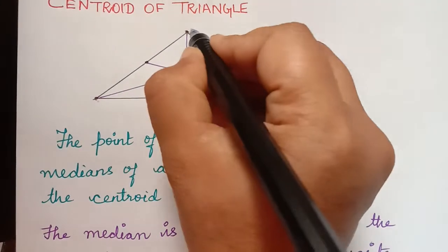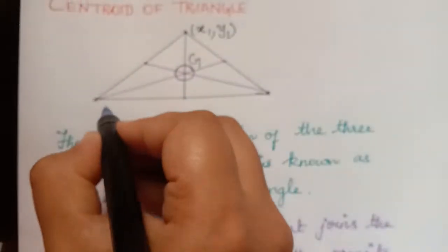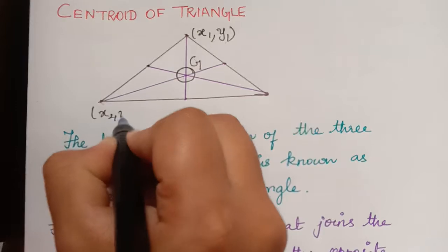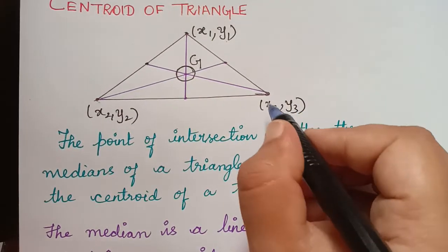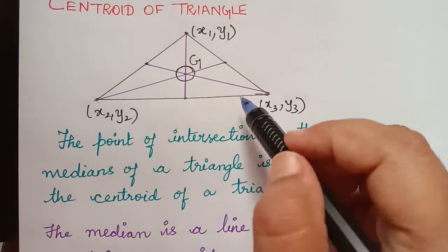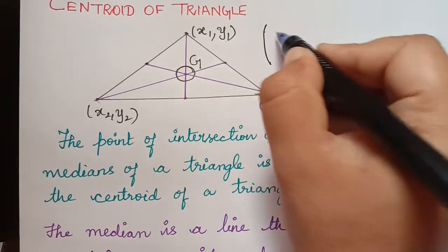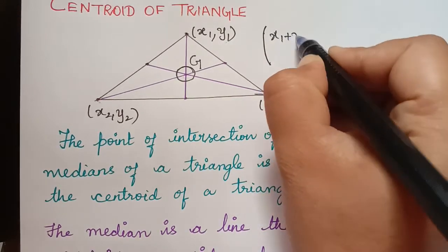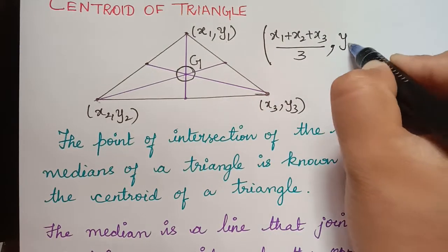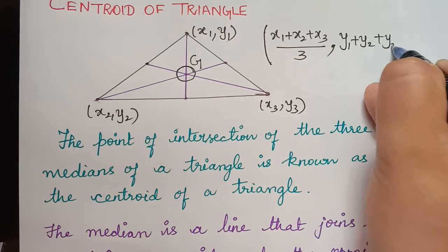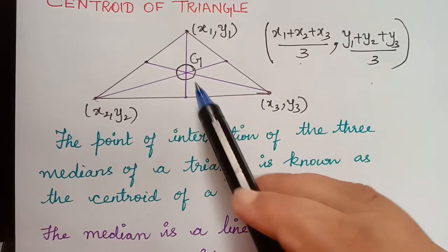Now let us see the formula for this. If three vertices are given, that is x1, y1, x2, y2 and x3, y3 are the three vertices of the triangle, now the centroid with these three vertices is evaluated by the formula. It is given by x1 plus x2 plus x3 divided by 3, comma y1 plus y2 plus y3 divided by 3. So this formula gives us the centroid of a triangle.